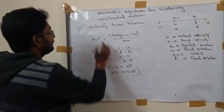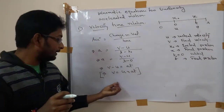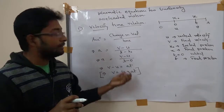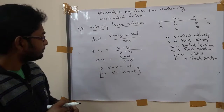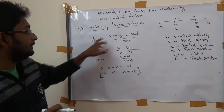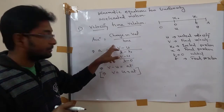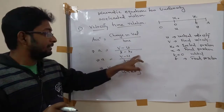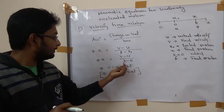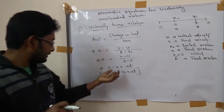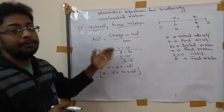So we can also write V equal to U plus AT. This is the velocity-time relation. Please remember this relation. Acceleration is change in velocity per time — final velocity minus initial velocity over final time minus initial time, with t equal to 0 initially. Taking the side change, we get this velocity-time relationship.